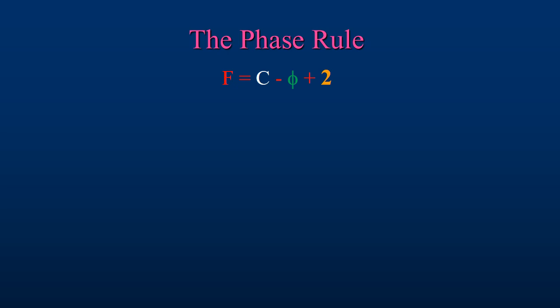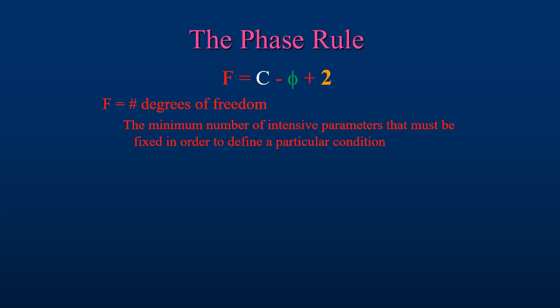If we remember, the Gibbs phase rule defines the degrees of freedom or how much a system can change for a given set of conditions. This equation defines the number of components, or in our case the number of chemical constituents, in relationship to the number of intensive parameters and number of mechanically separable constituents or phases.